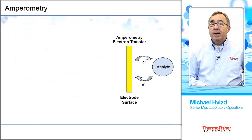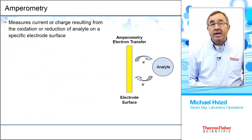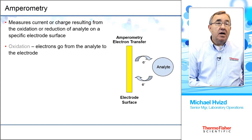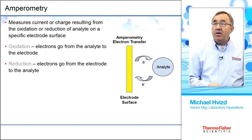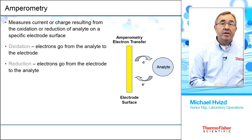Next, let's look at the detection technique. Amperometry is a technique whereby we measure the current or charge resulting from the oxidation or reduction of the analyte on a specific electrode surface. When analyzing carbohydrates, we use a gold electrode. During the oxidation reaction, electrons go from the analyte to the electrode. In a reduction reaction, electrons go from the electrode back to the analyte. For essentially every separation we do, the detection scheme is an oxidation reaction — we measure the current based on the oxidation of the carbohydrates on the surface of the gold electrode.